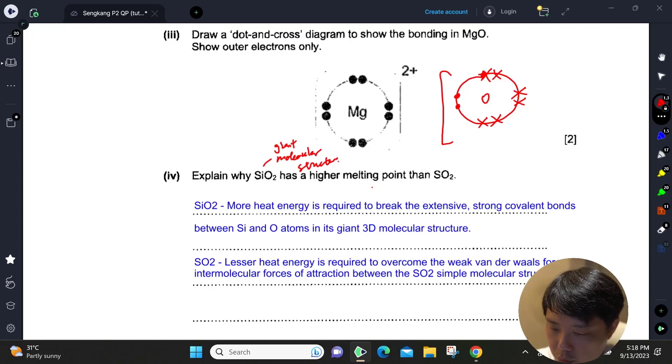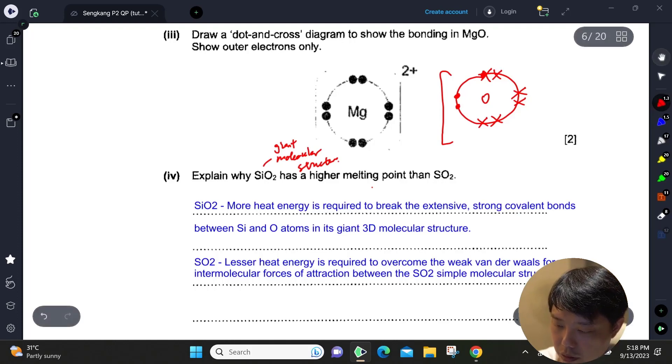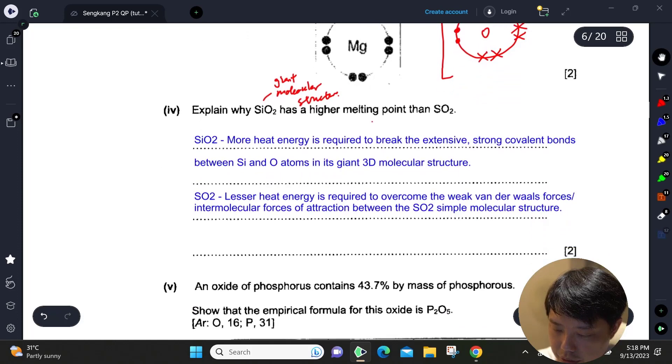Whereas for sulfur dioxide, it's just weak van der Waals forces of attraction between simple molecular structures, so definitely it is much easier to overcome.